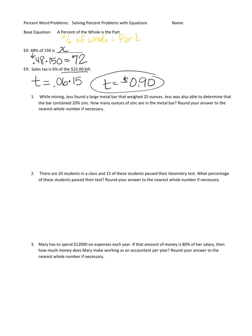So let's look at a couple more complicated problems and try to write our base equation. While mining, Jess found a metal bar that weighed 25 ounces. Jess was also able to determine that the bar contained 20% zinc. How many ounces of zinc are in the metal bar? So what I need to do is change this so that I have a base percent problem. What it's really telling me is that 20% of the bar is zinc. The bar weighs 25, so the bar is the same as 25 ounces. And I don't know the zinc. That's what I'm going to try to find.